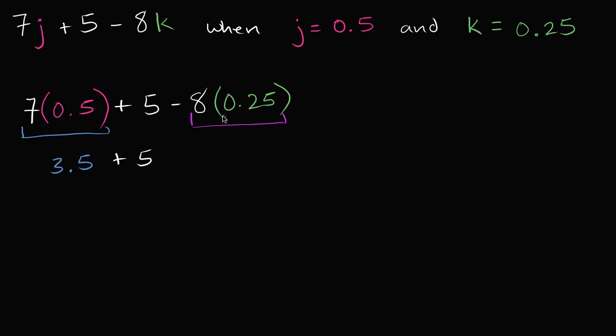I could rewrite this if I want. 0.25, that's the same thing as 1 fourth. 8 times 1 fourth, or another way to think about it is 8 divided by 4, is going to be equal to 2. So this whole thing over here is going to be equal to 2. So it's going to be minus, we have this minus out here, so minus 2.